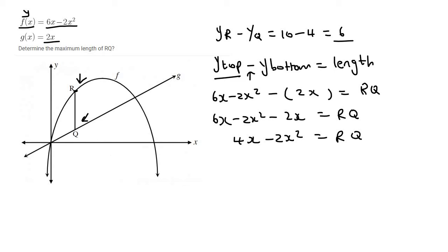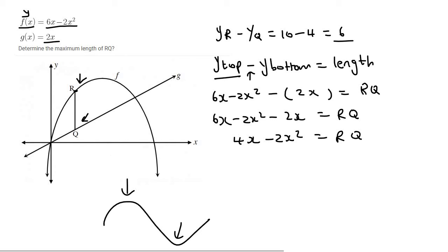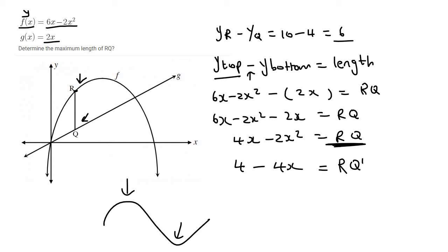We've seen this in previous lessons. For any type of minimum or maximum — like finding turning points on a graph — it's always the first derivative equal to 0. So we take the length formula we've just made and take the first derivative: RQ' = 4 minus 4x. We then make that equal to 0: 4 minus 4x equals 0, so 4x equals 4, giving us x equals 1.